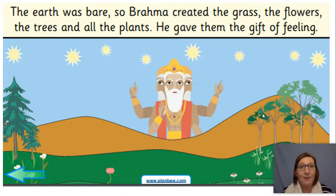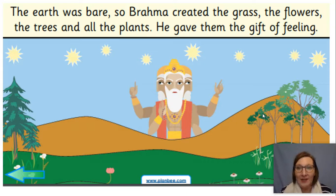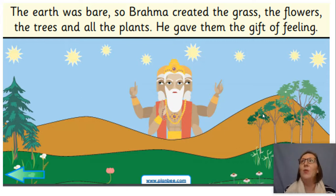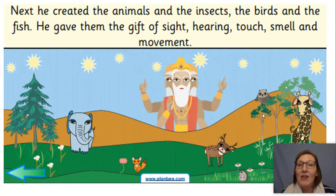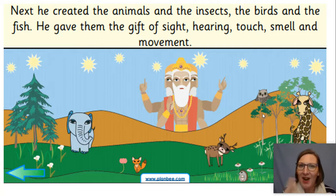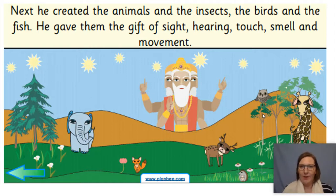The earth was bare - it didn't have anything on there yet. So Brahma created the grass, the flowers, the trees and all the plants, and he gave them the gift of feeling. Do we think that plants can feel? Well, I definitely think they can feel the wind and they can feel the sunlight and the cold and the warmth. How amazing! Next, he created the animals and the insects, the birds and the fish, and he gave them the gift of sight, hearing, touch, smell and movement. That links to our five senses, like what we have and we've been looking at in science.